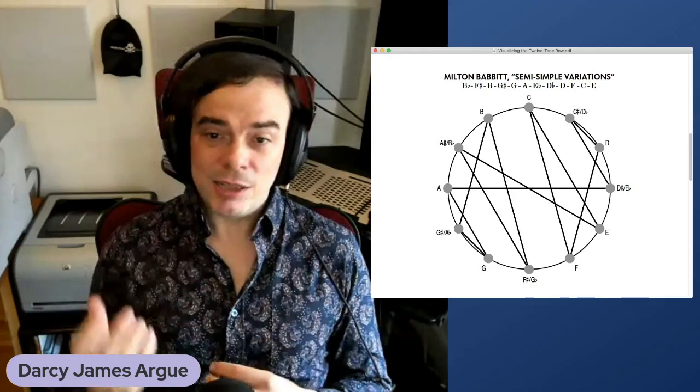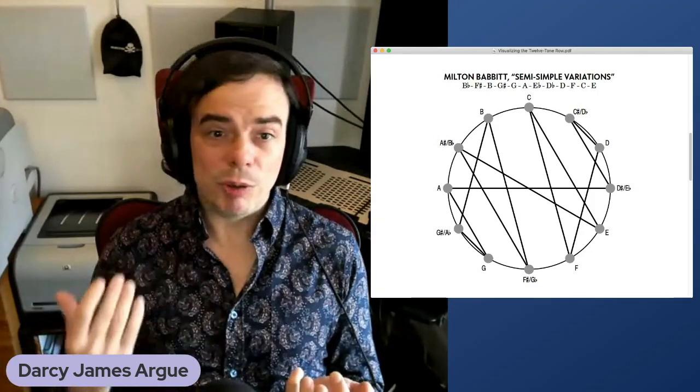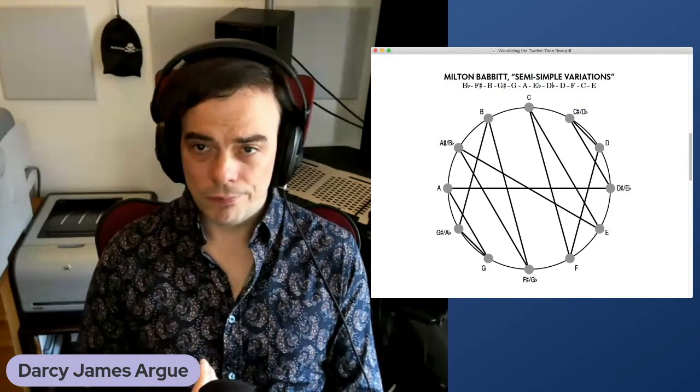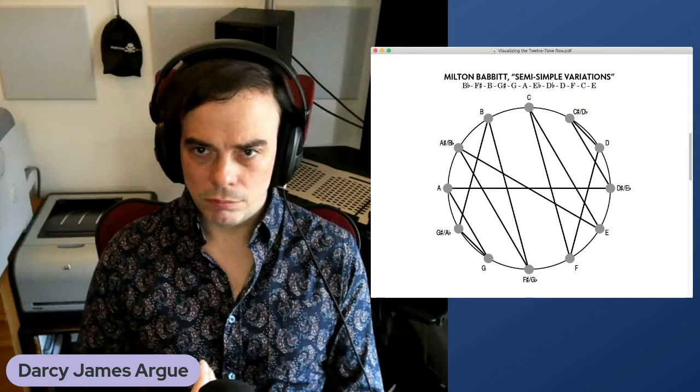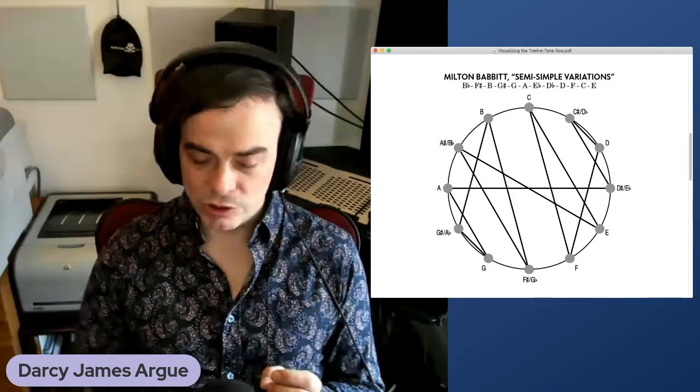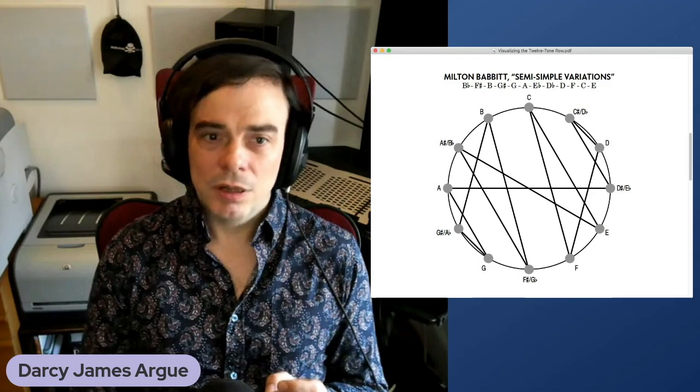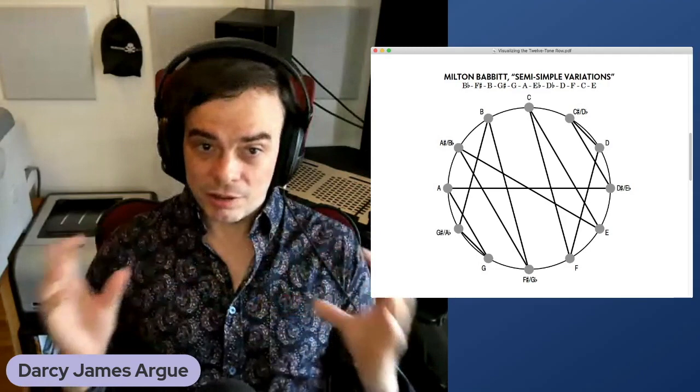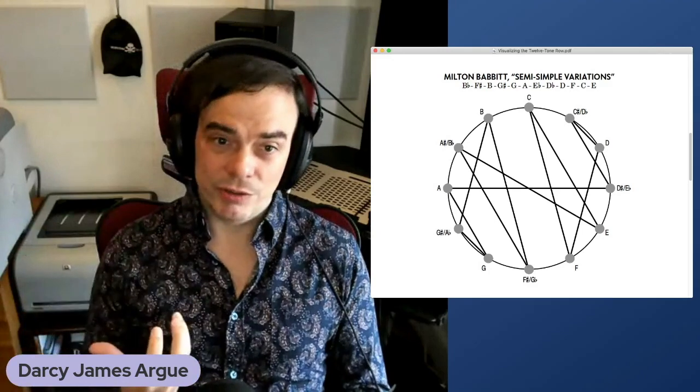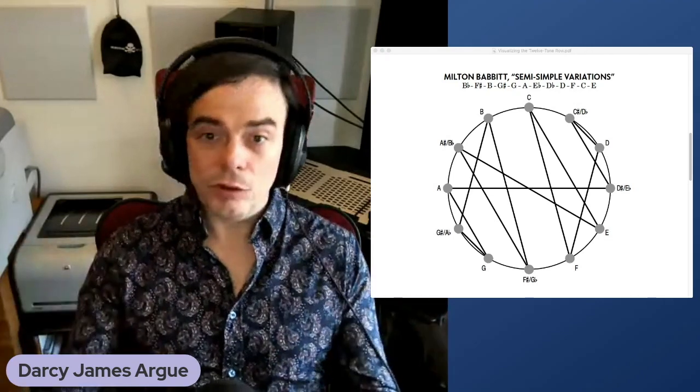One of the famous aspects of this row is that the first six notes and the last six notes of the row are mirror images of one another. So for instance, if I play the first six notes of the row... And then I play the last six notes of the row, beginning with the last note, and going backwards through the row, I get this... So as you can hear, the last six pitches of the row are a transposition of the first six pitches of the row, and placed in retrograde or reverse order.